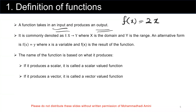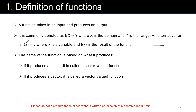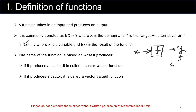A function is commonly denoted as f from domain X to range Y. We call X the domain for this function and we call Y the range of this function. An alternative format is f of x is equal to y, where x shows the variable and f of x is the output of the function. If we show the function like this box, the input for this box is variable x and then the output is y. The name of the function is based on what it produces — based on its output. If the function's output y is a scalar, then we call it a scalar value function.